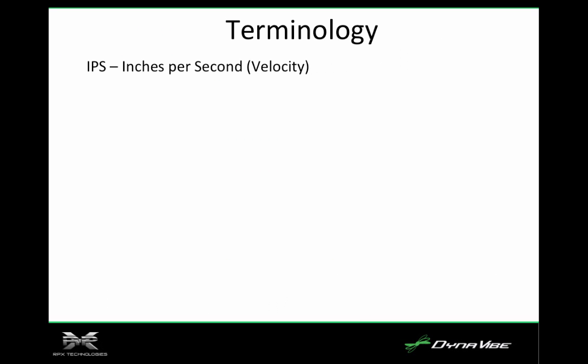When we talk about vibration, we're going to be talking about it in terms of inches per second. That's the velocity of the vibration. We display all the data in inches per second — that's the velocity that the airframe, engine, or propeller is moving up and down.